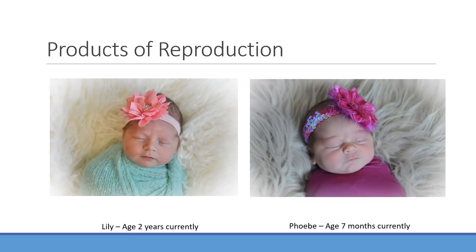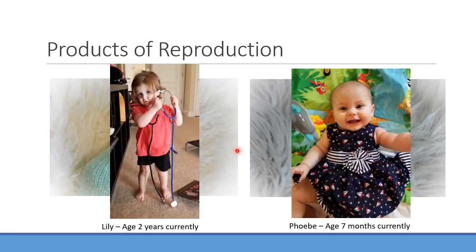So reproduction — here's some products of reproduction. I just use this as an opportunity to note my children. So I have little Lily over here; she's two right now, and then I have little Phoebe. They look so similar when they're so young. I didn't realize they do like bougie day-one photo shoots for babies, and there's quite a price to go along with that. But here's what they look like now — Lily is practicing medicine with two stethoscopes, and Phoebe is about seven months old now. Very cute little children, if I do say so myself, though I'm a little biased.